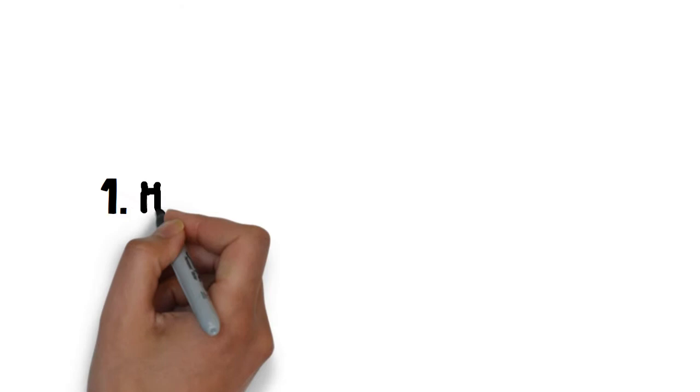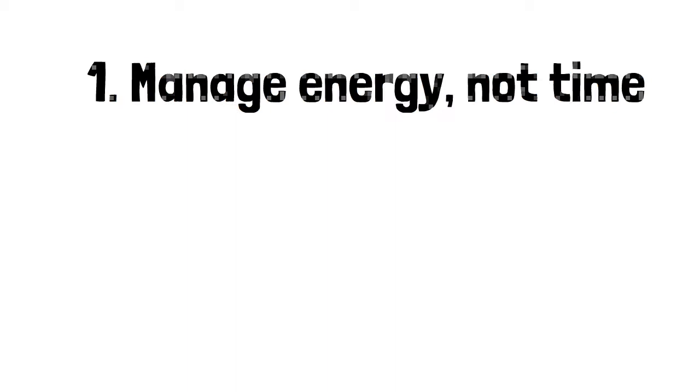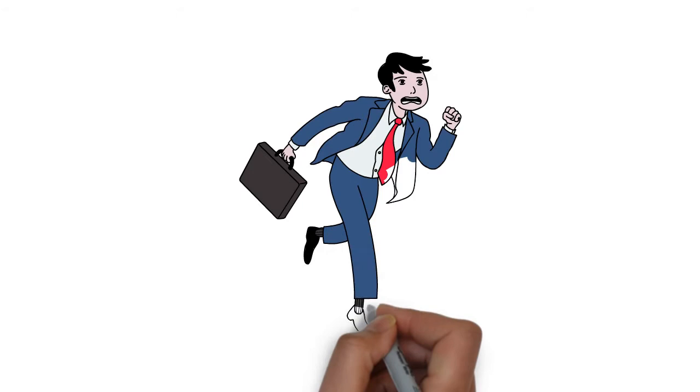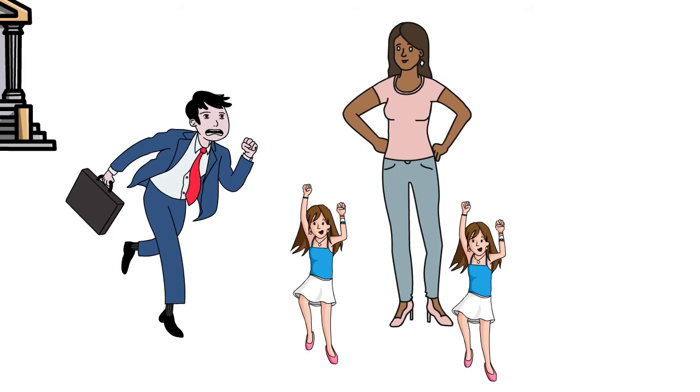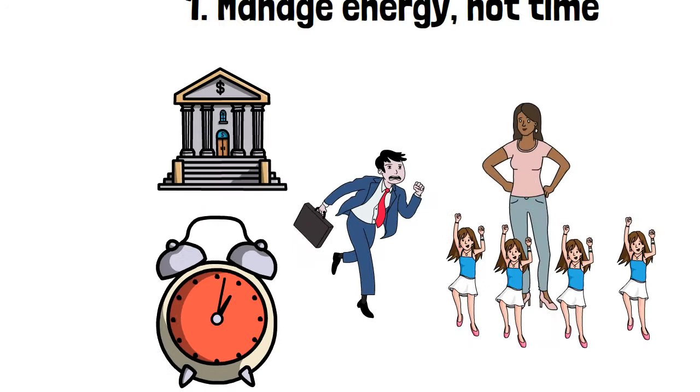Idea number one: Manage energies, not time. Here we see Steve. Steve is a highly respected 37-year-old partner at Ernst & Young. He's married and he has four young children. When the authors met him, he was working 12 to 14 hours a day. He barely found time for sleep, exercise, family, healthy eating or hobbies. He felt constantly exhausted and found it difficult to recover.